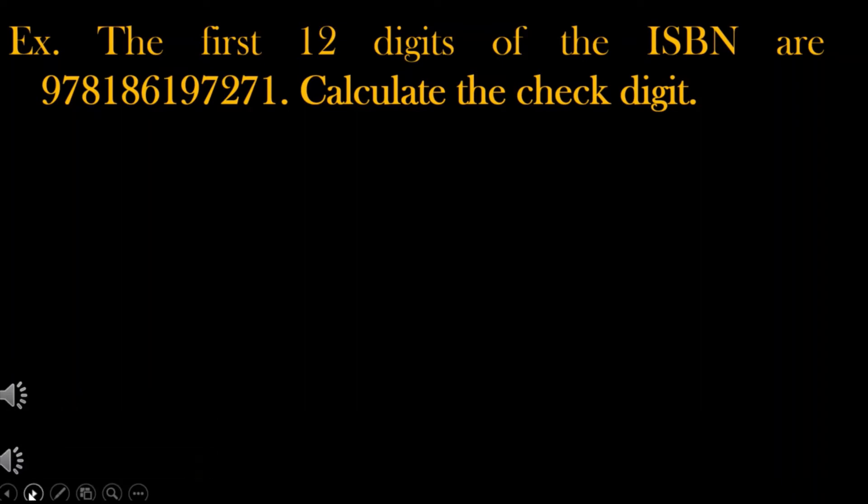Let us proceed with the examples. Example number 1. The first 12 digits of the ISBN are 9, 7, 8, 1, 8, 6, 1, 9, 7, 2, 7, 1. Calculate the check digit.